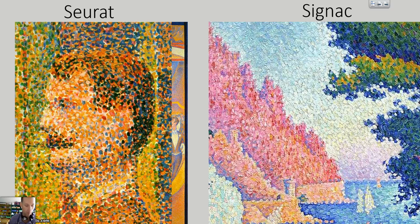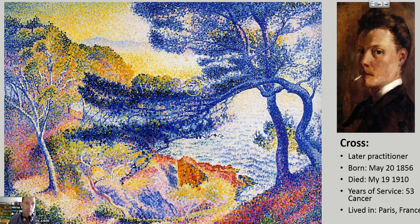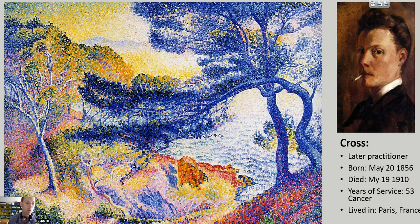My favorite here is Henry Edmund Cross. He kind of combined neo-impressionism's style with a little bit of Fauvism and enhanced his colors. So this is a very different interpretation of neo-impressionism — it's almost bordering on Fauvism. He was born in 1856 and died in 1910, with 53 years of working career, and he unfortunately died of cancer.